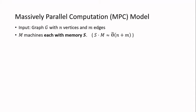In this model, we are given an input graph G with n vertices and m edges, and we want to solve some problem on this graph. However, the graph is too large and cannot fit into the memory of a single machine, so we have to use multiple machines to store the input and do the computation. Let's say that we have M machines and each of them has memory size S. We assume that the total memory is just enough to store the input, so S times M is roughly equal to m plus n, which is the size of the input graph.